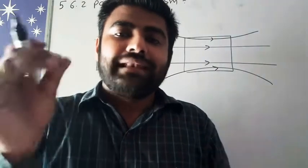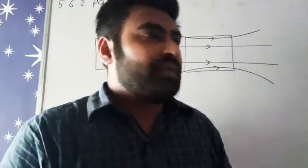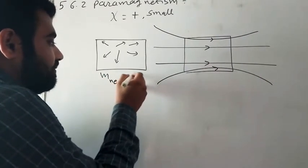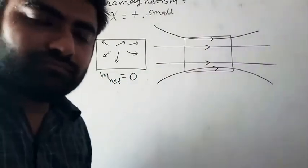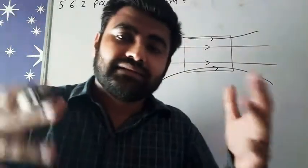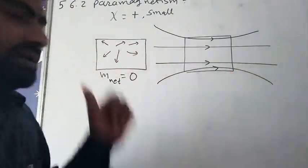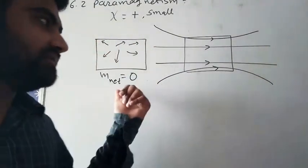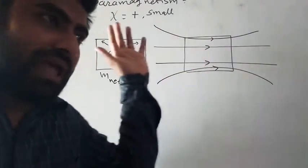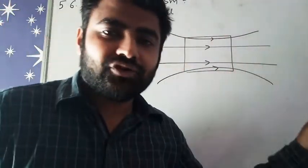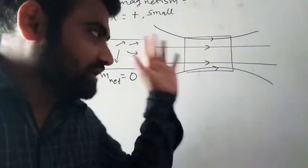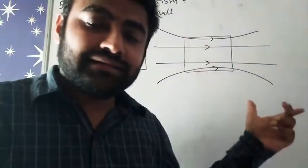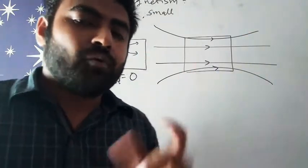The net magnetic dipole moment will be zero initially because all are randomly directed. If we take the algebraic sum of random directions, that will be zero. But here, everything will align in the direction of magnetic field in one direction. That's why here we get magnetization or we can say net magnetic moment.